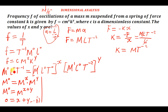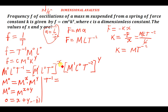Looking at L: it is raised to the power zero on both sides, so we can move on. For T: on the left side T is raised to the power negative one. On the right side, the mass term contributes T to the power zero, which gives zero times x equals zero, so it vanishes. We remain with T to the power negative two raised to the power y, which gives T to the power negative two y.